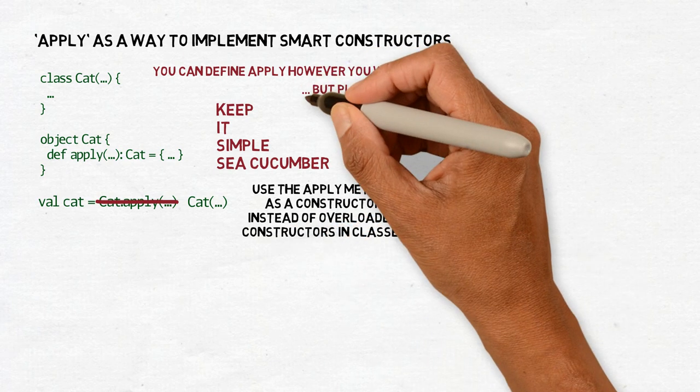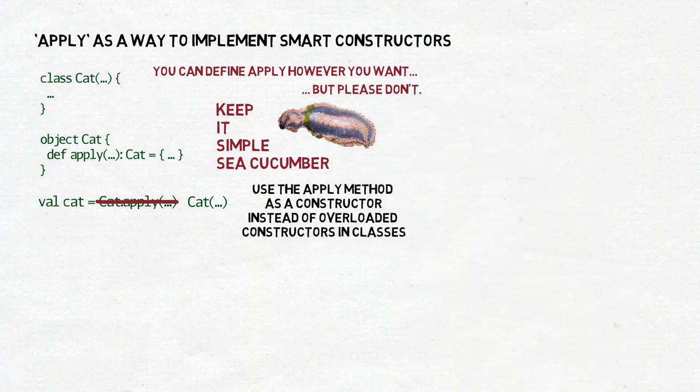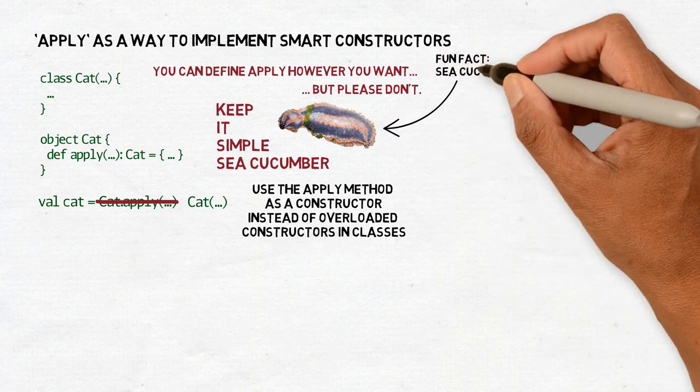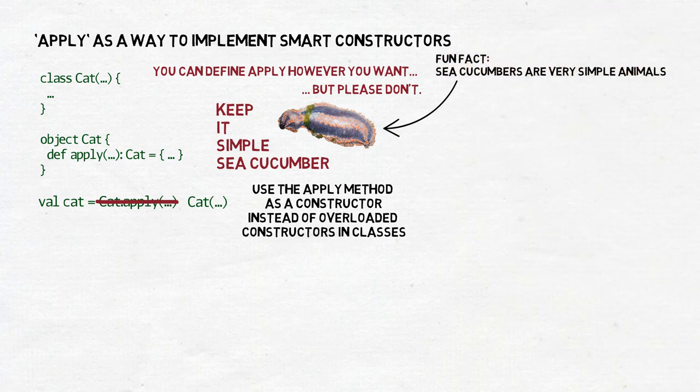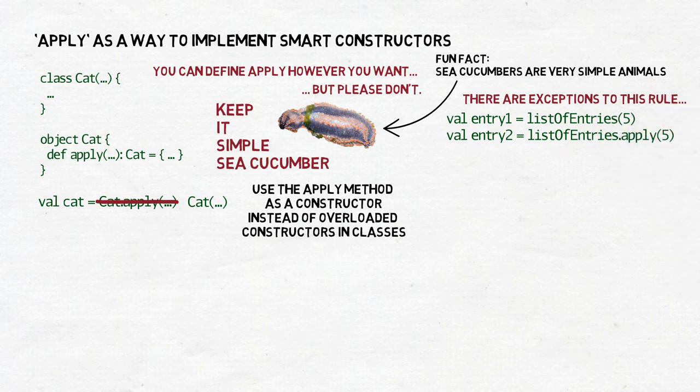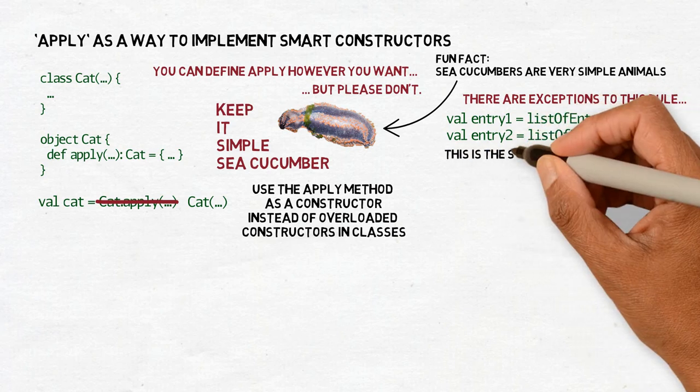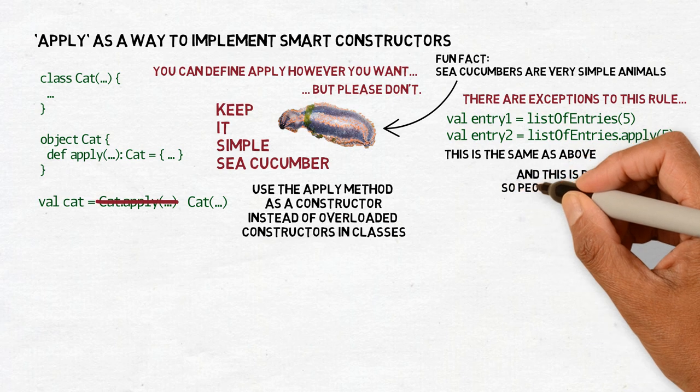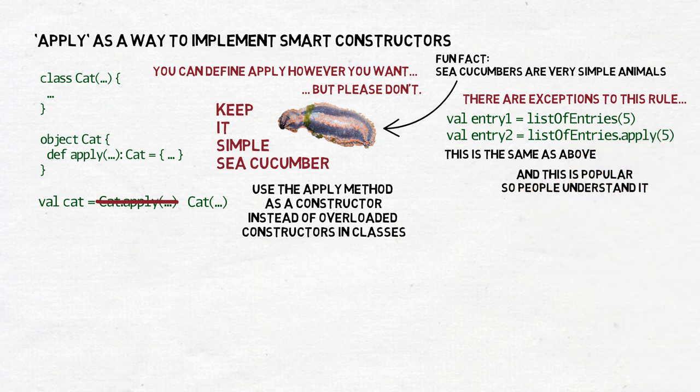Yes, you can define a method with this name for any purpose and put it either in the class or in the companion object, but if you care about the readability of your code, put it only in the companion object, never in the class and use it only as a constructor. There are a few other ways you can use apply. For example, the collections library uses it often to retrieve data from a collection which superficially looks as if Scala traded the square brackets of more traditional languages for parentheses. And this use is popular enough that people understand it when they see it, but if you try to use it for something much different, you will only confuse other programmers and yourself in a few months in the future.